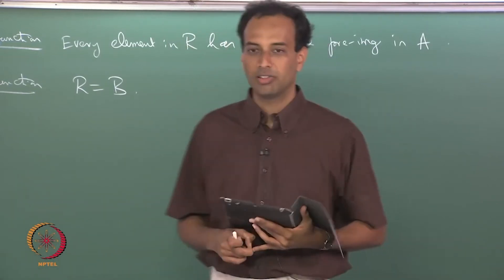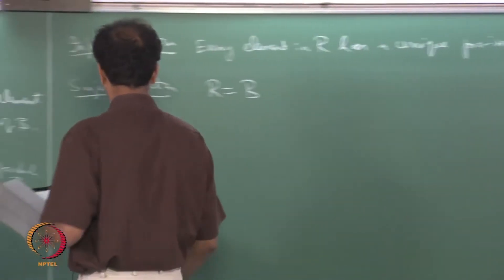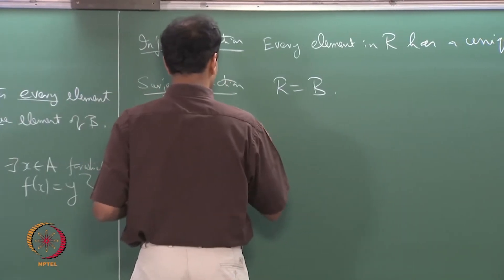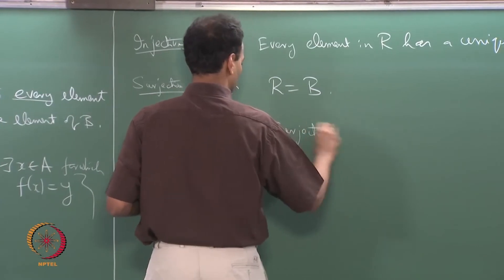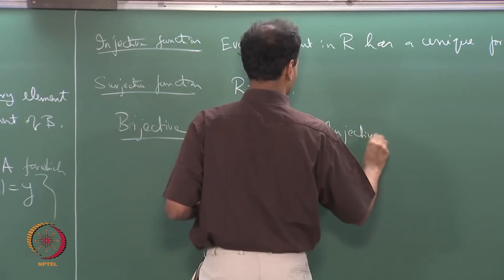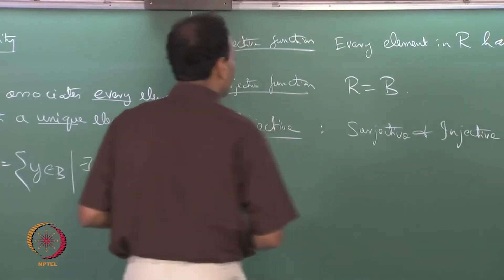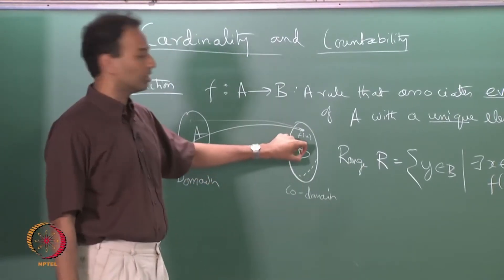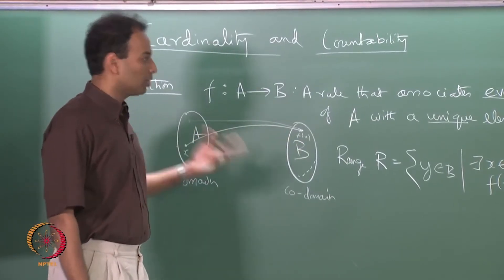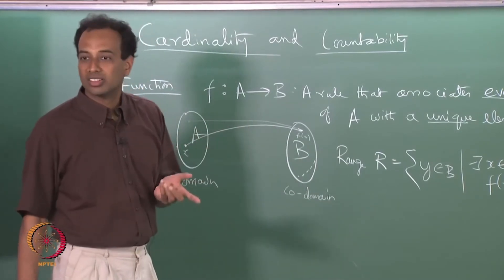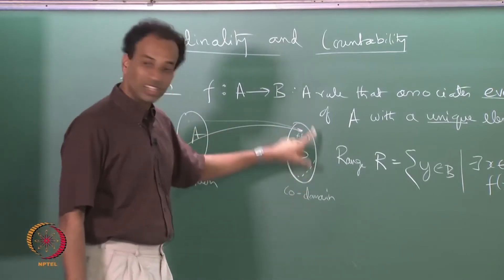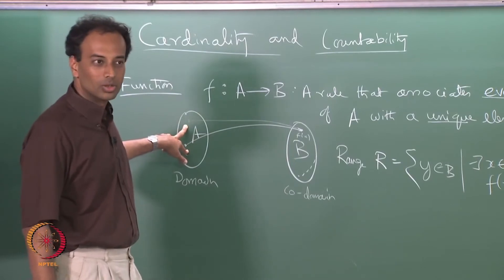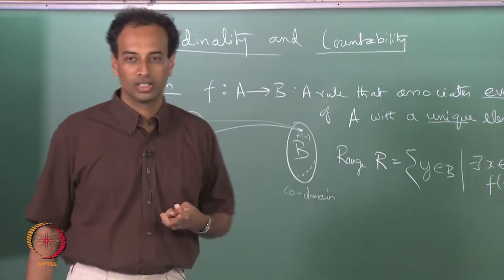A function which is both injective and surjective is called a bijective function. For a bijective function, the co-domain coincides with the range and every element in the range has a unique preimage. One can argue that for a bijective function, the inverse map is also a valid function — because it is surjective, nothing is left out, and there is no problem of multiple values. So bijective functions are sometimes called invertible functions.